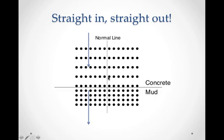What you'll notice here is when the band members get to the mud, they slow down and bunch up. When a wave comes in and transitions straight into the other medium - in other words, where the normal line is perpendicular to the interface - the wave comes straight in and it's going to go straight out, even though it does slow down.